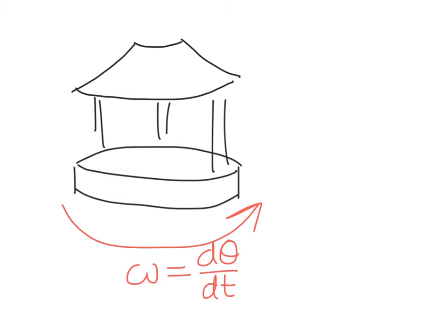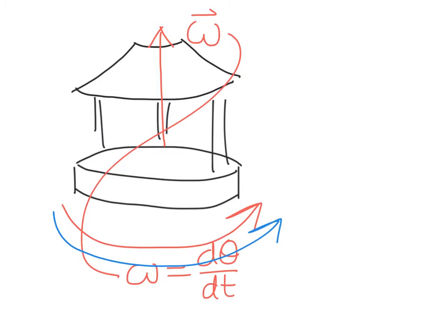We can specify this rotation by drawing a vector which points along the axis of rotation. For a merry-go-round, the axis of rotation runs right through the middle. The length of this vector corresponds to the angular velocity, and the direction is specified using the right-hand rule. For counterclockwise rotation, we wrap our right hand in the direction of rotation so that our thumb points along the direction of the angular velocity vector.